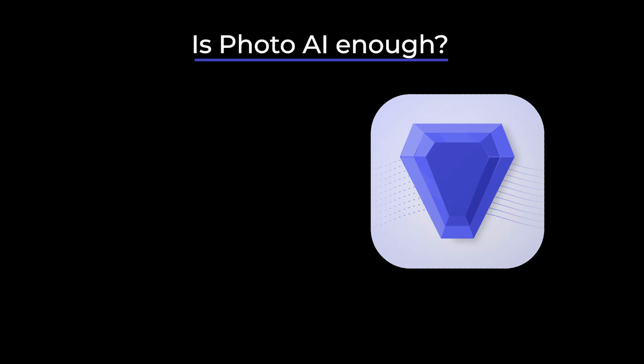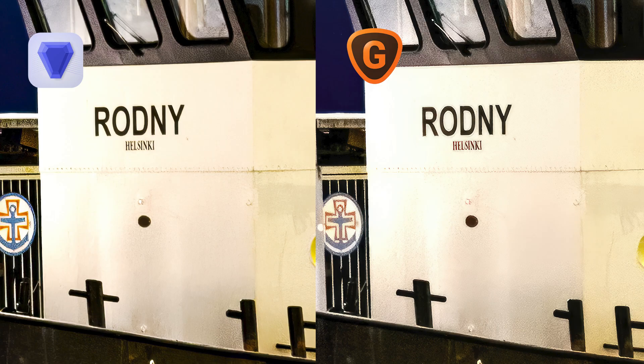How does Gigapixel AI compare to Photo AI? In Photo AI, Topaz has combined their AI software into one — it has noise reduction, sharpening, enhancements, and upscaling. Do you still need other software like Gigapixel AI? The short answer is yes. The result from Gigapixel AI is a lot better. Photo AI is excellent if you need to enhance images and make them look technically better, and the workflow is much smoother. If you need to upscale your image, I suggest using Gigapixel AI version 6.3.3.